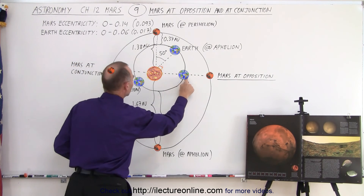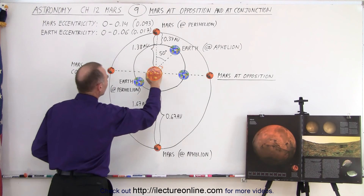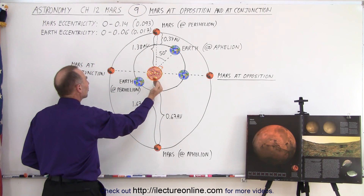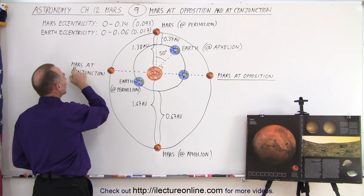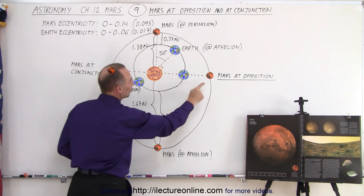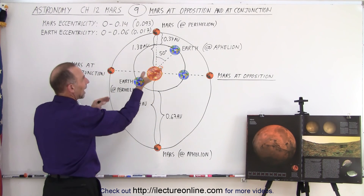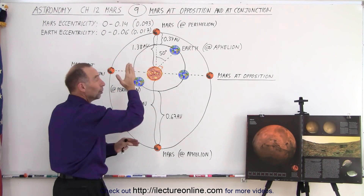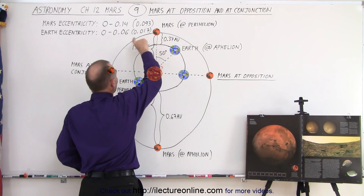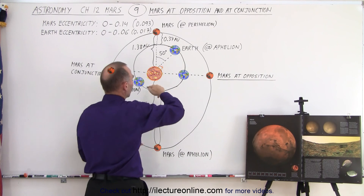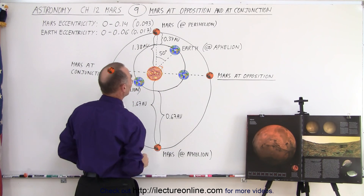If the Earth is over here and Mars is over here, again on the same line between Earth, Sun, and Mars, but now the Sun is on the other side — Mars on the other side of the Sun — then we say that Mars is at conjunction. So this is Mars at opposition, and this is Mars at conjunction. That can happen at any point in the orbit. At the farthest point, they're 0.67 astronomical units apart; at the closest point, they're nearest to each other.